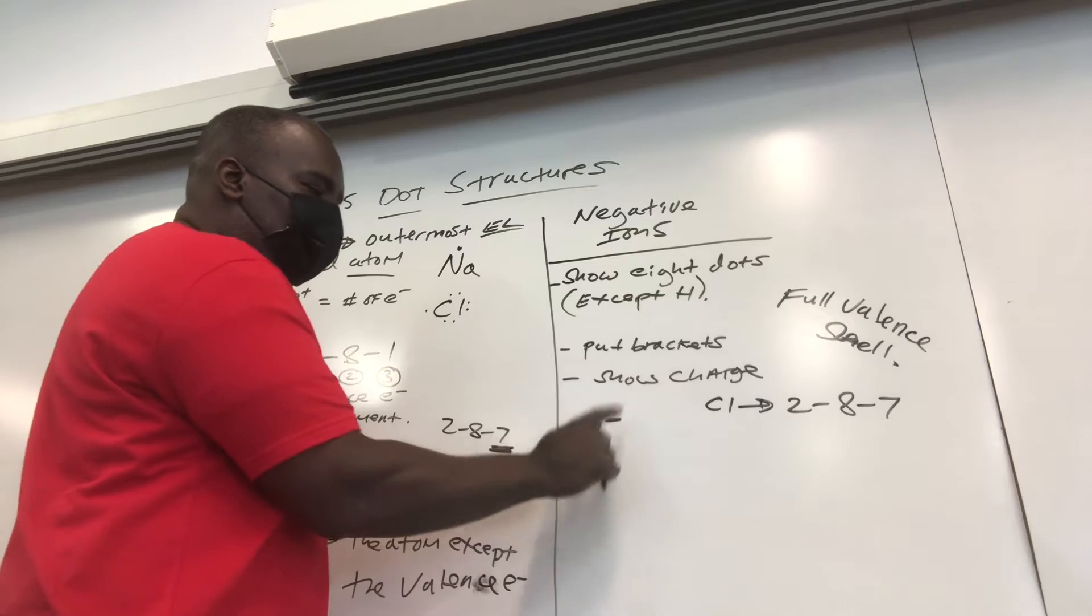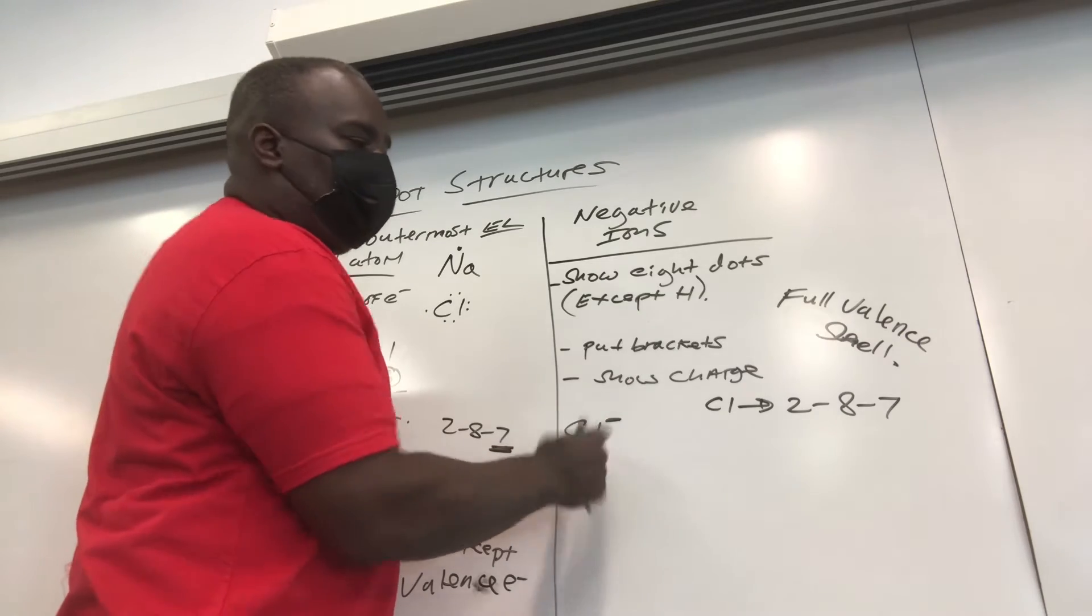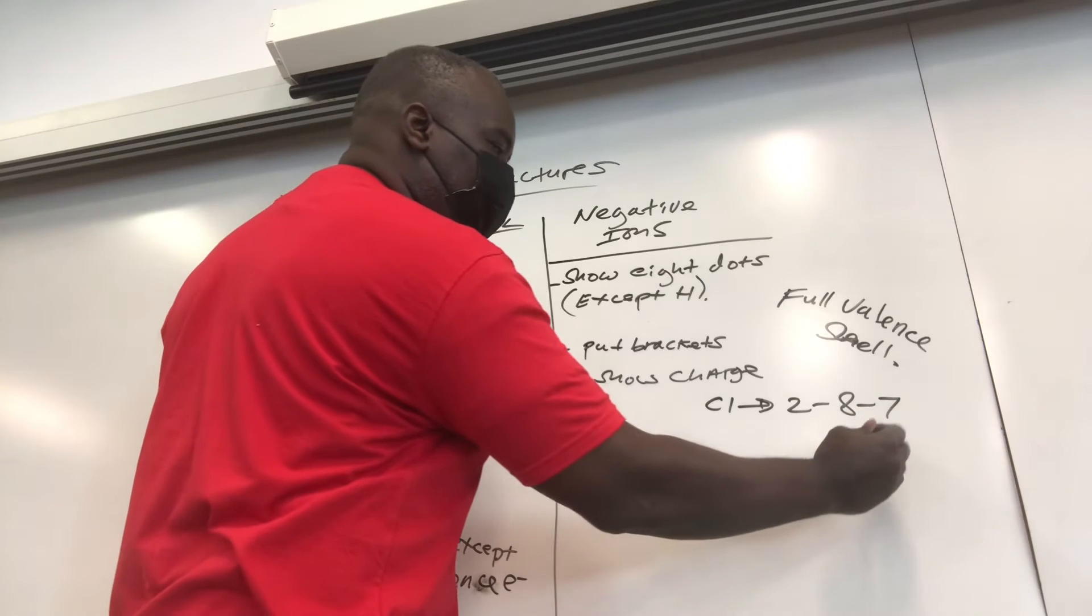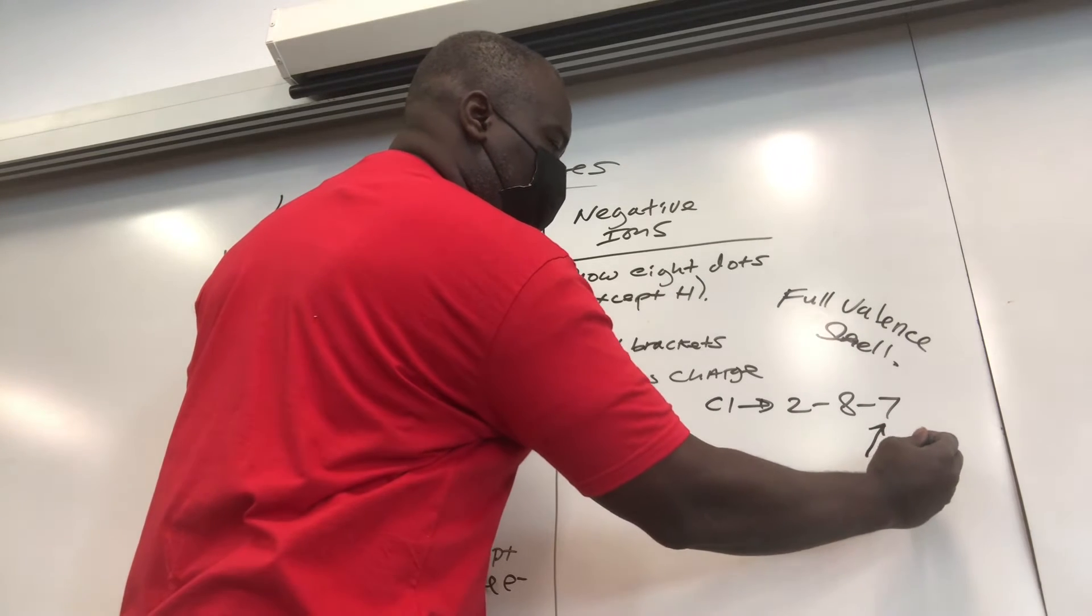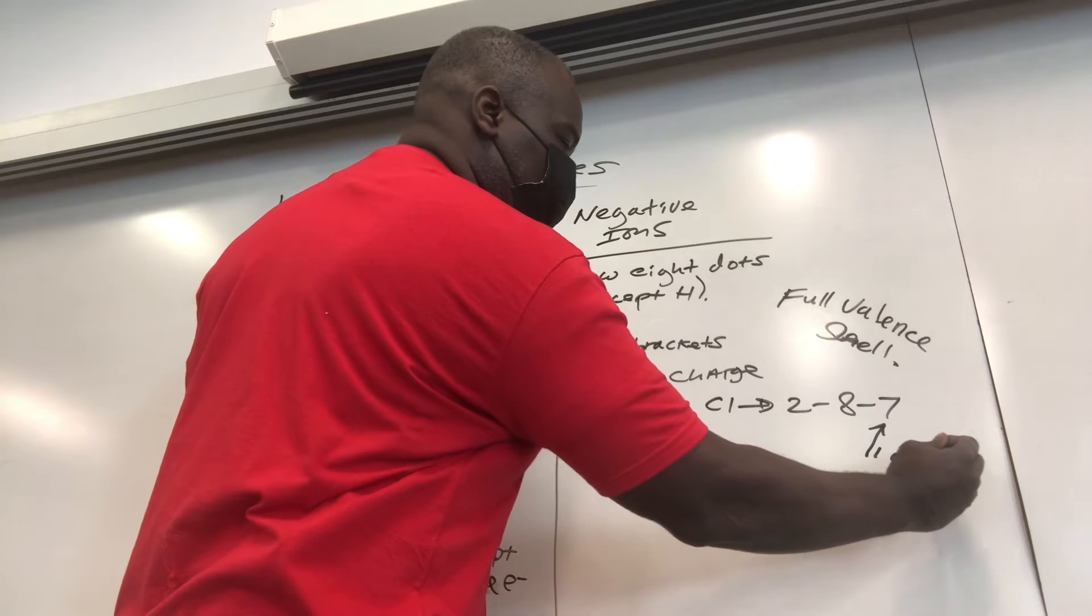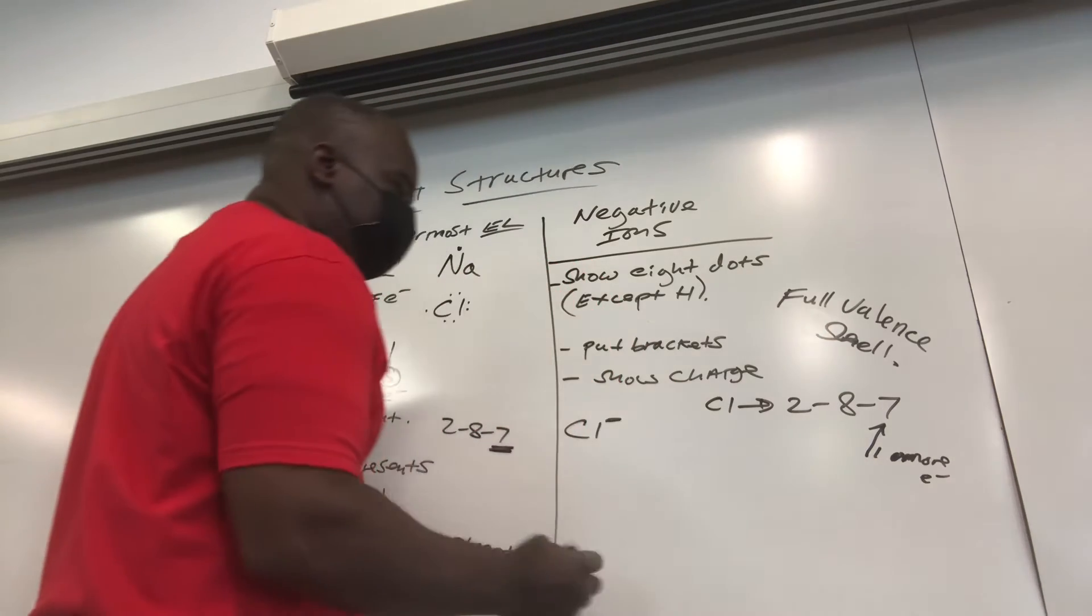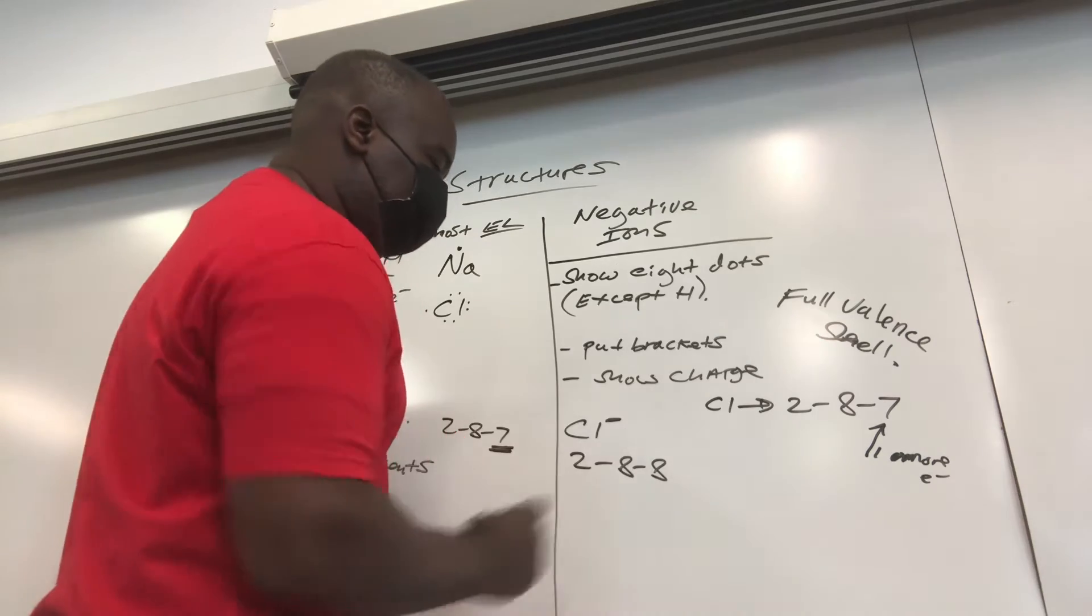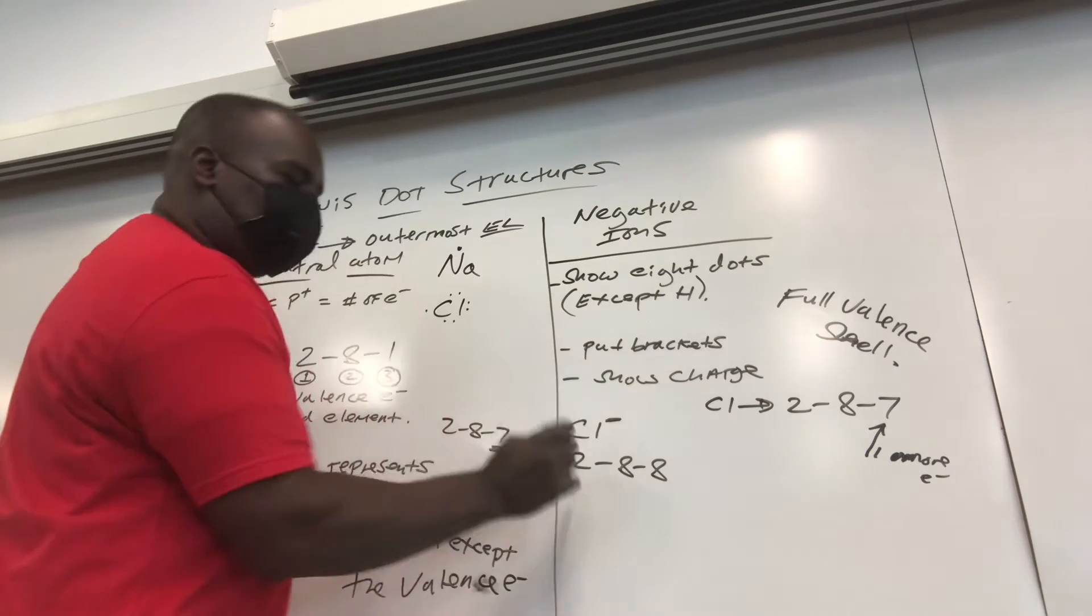So we know he's negative. We know he gained 1 more. So if he gains 1 more, remember it's all about the valence shell. He gains 1 more electron. His configuration now is going to be 2-8-8.